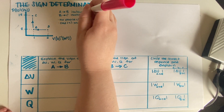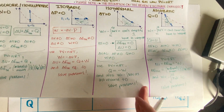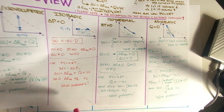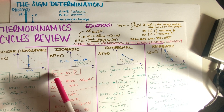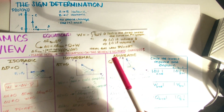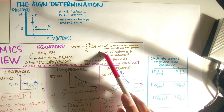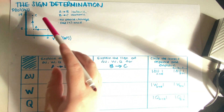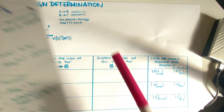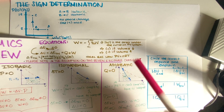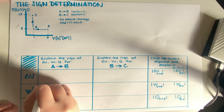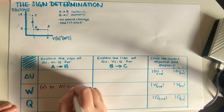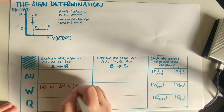A to B is an isobaric process. With an isobaric process we have a simplification. The first thing we can figure out is the work, because for work the sign is defined by whether the volume goes up or down. In this case, when we go from A to B the volume is going down, and when the volume is going down, that means that the work is positive — because delta V is negative.